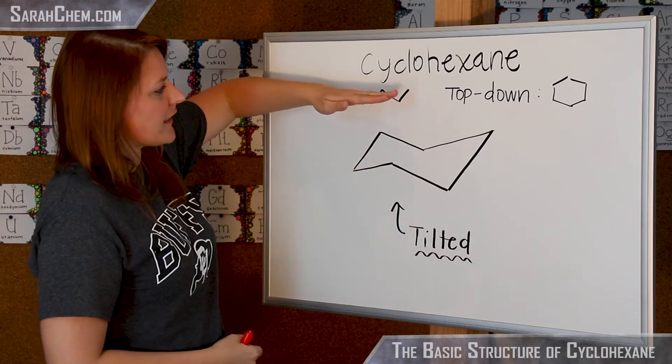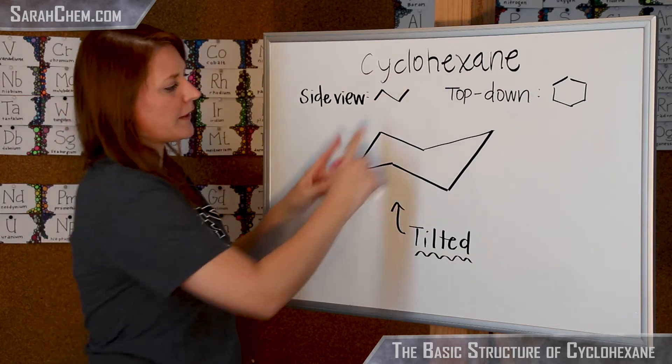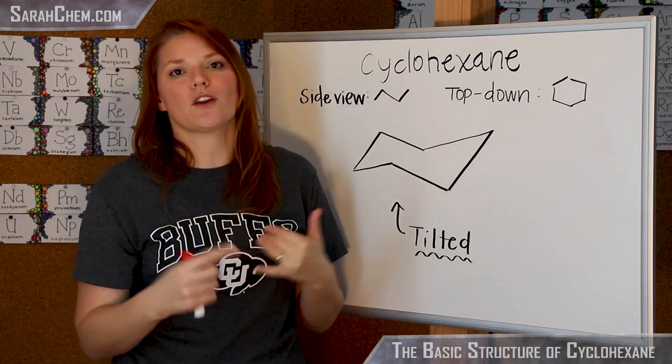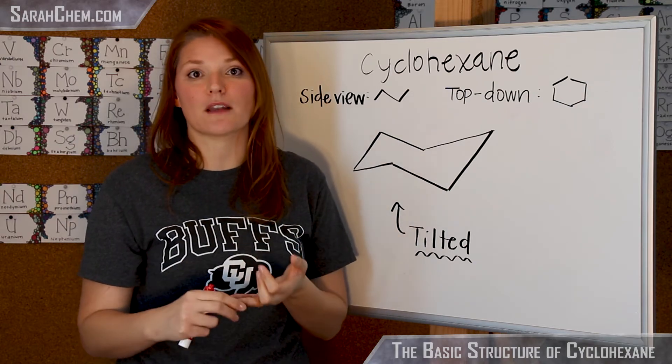So what we do is we take that side view and tilt it just a little bit so now we can see all of our carbons. That's important because we want to understand the reactivity or the stability of our compound.